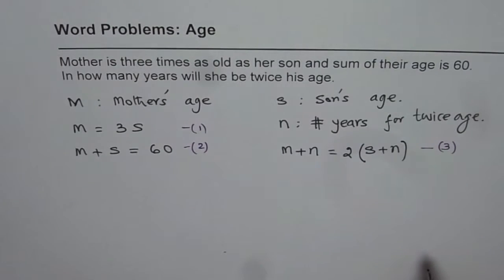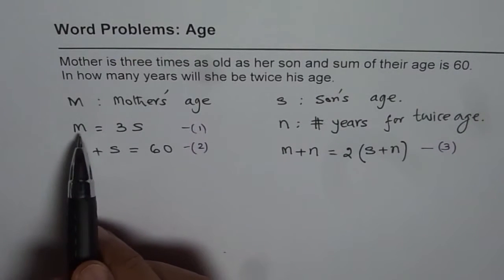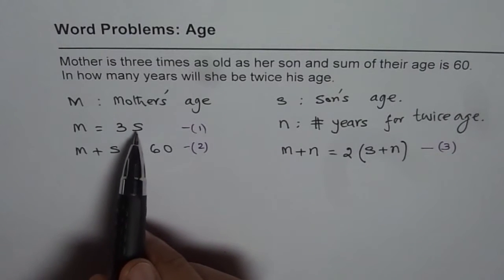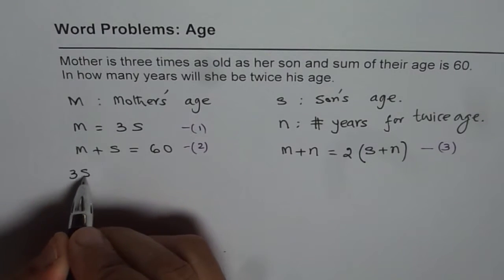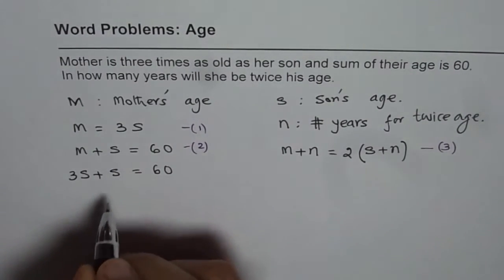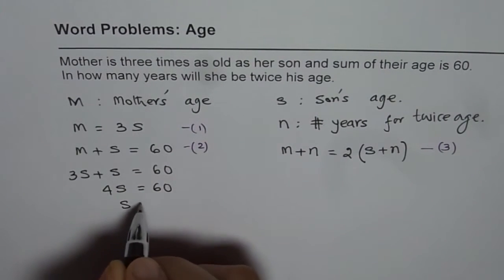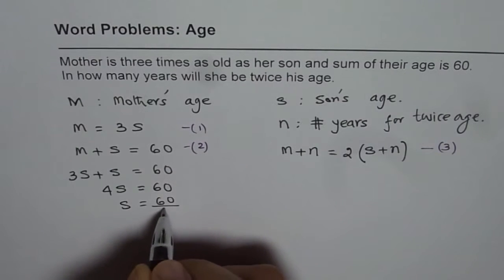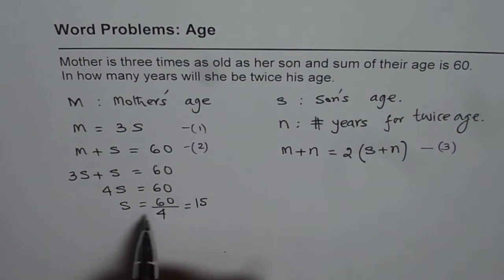Now we have three different variables. Let us start solving them one by one. Equations 1 and 2 can be solved simultaneously. We can substitute the value of M, which is equal to 3S, in equation 2. So if we do that, then we have 3S plus S equals 60. 3S plus S is 4S equals 60. And S is equal to 60 divided by 4, which is 15. So we know son's age is 15.